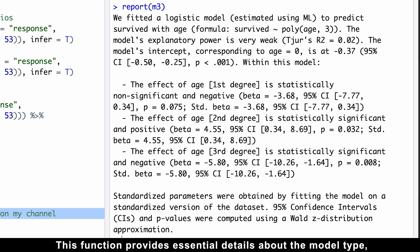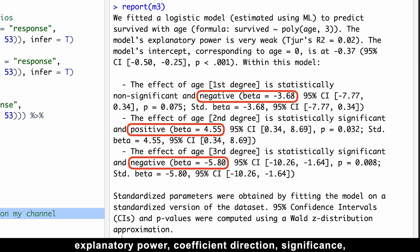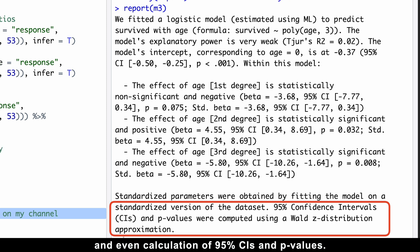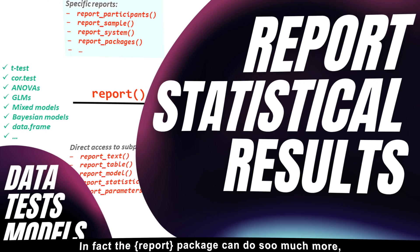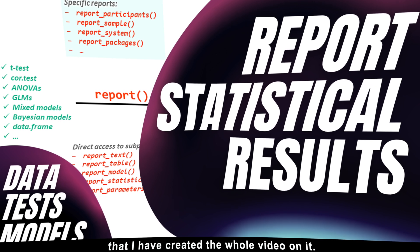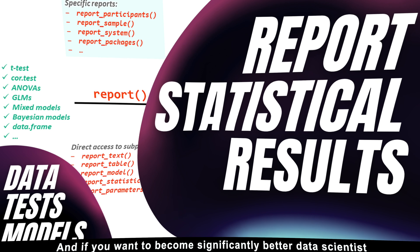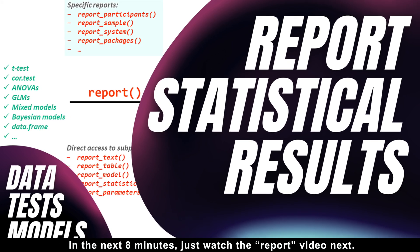This function provides essential details about the model type, explanatory power, coefficient direction, significance, and even calculation of 95% confidence intervals and p-values. In fact, the report package can do so much more that I have created a whole video on it. And if you want to become significantly better data scientists in the next 8 minutes, just watch the report video next.